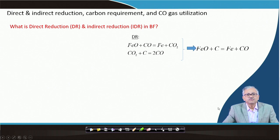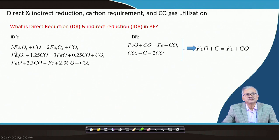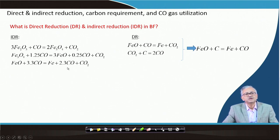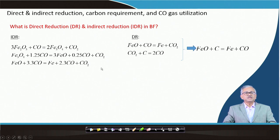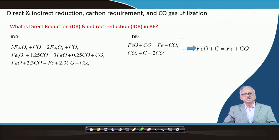Now what is indirect reduction? Indirect reduction can be written as: Fe₂O₃ + CO → Fe₃O₄ + CO₂, then Fe₃O₄ + CO → FeO + CO₂. These are equilibrium reactions. You can find here that all reactions are taking place by CO, and carbon is not directly participating in these reactions.